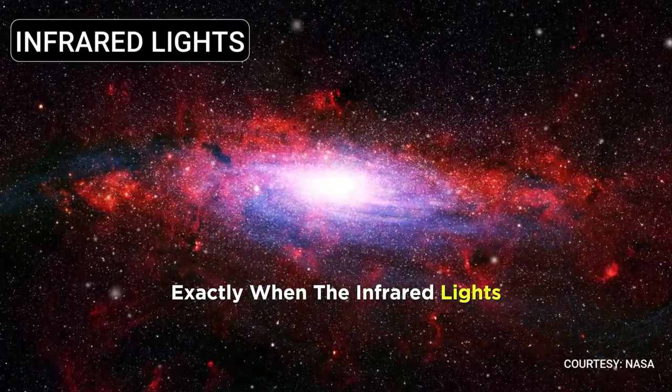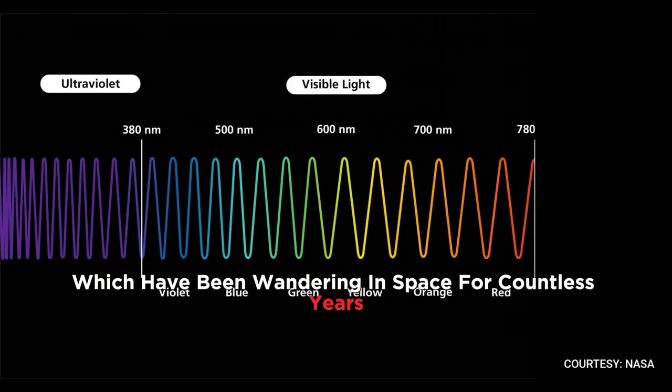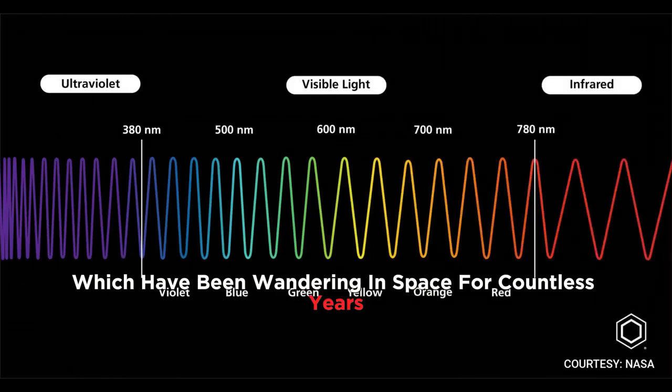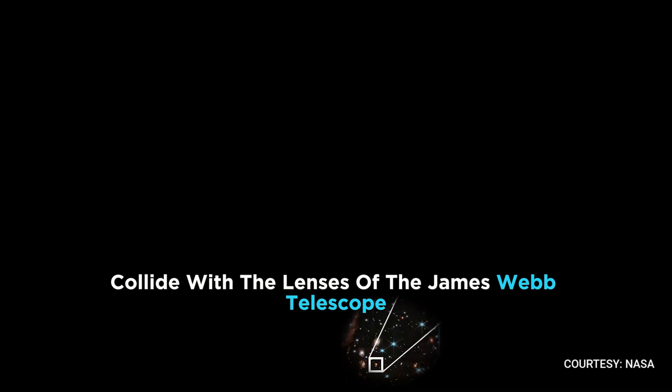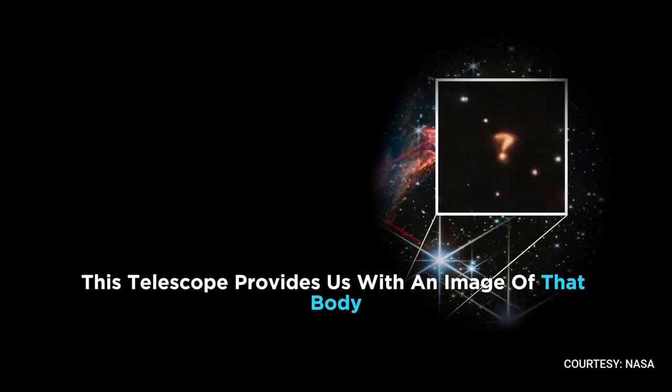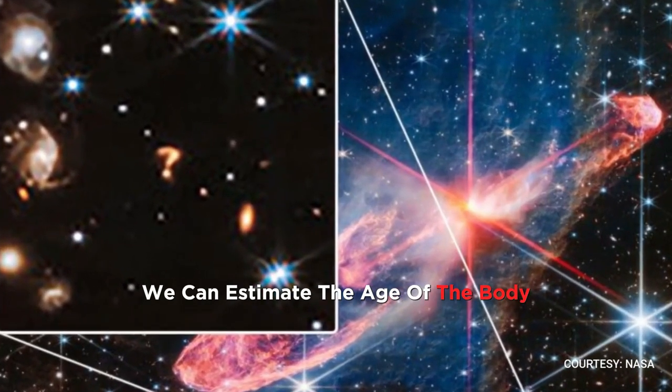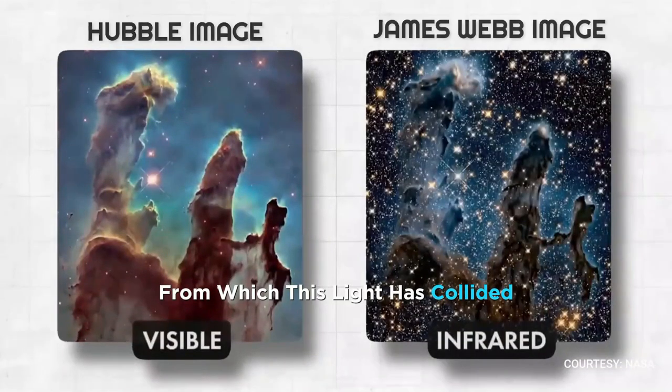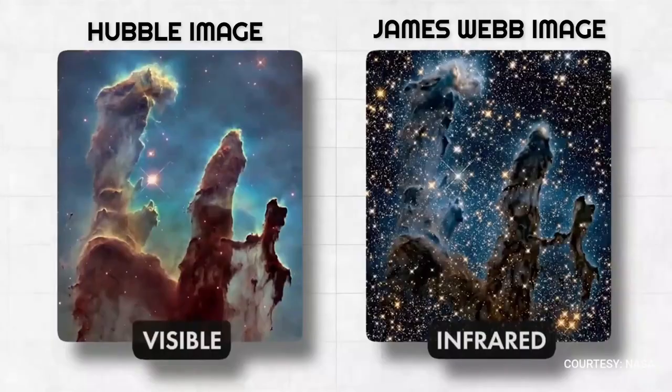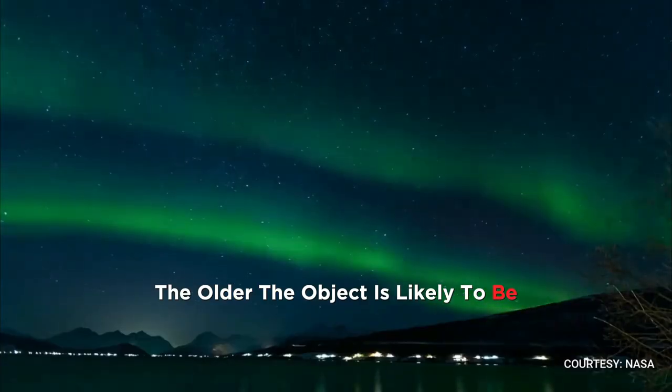Exactly. When the infrared lights emanating from a celestial body present in space, which have been wandering in space for countless years, collide with the lenses of the James Webb Telescope, this telescope provides us with an image of that body. From the energy of this infrared light, we can estimate the age of the body from which this light has collided, because the lower the energy, the older the object is likely to be.